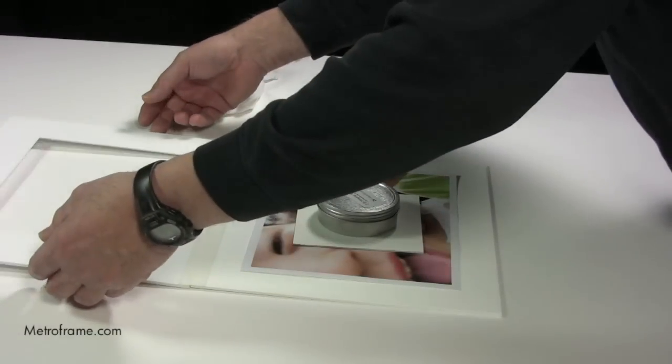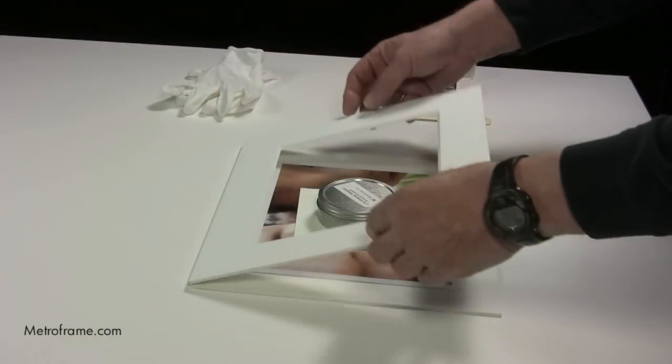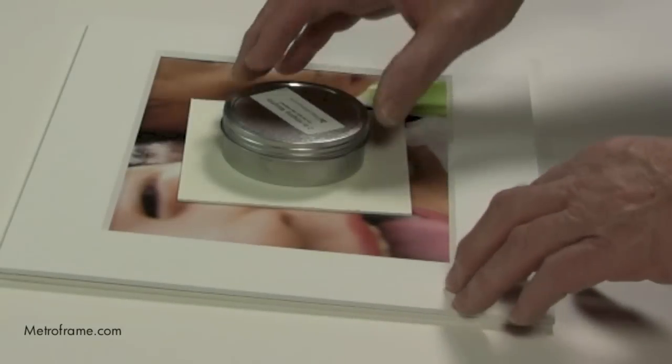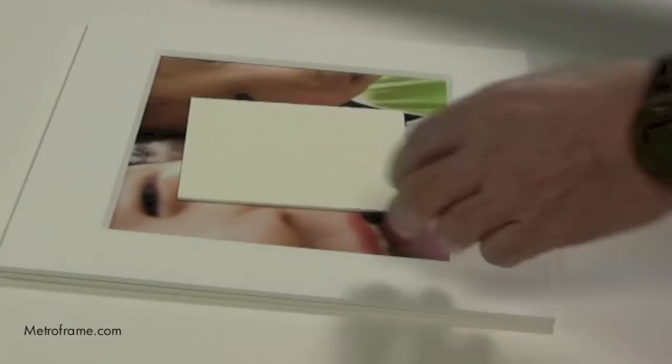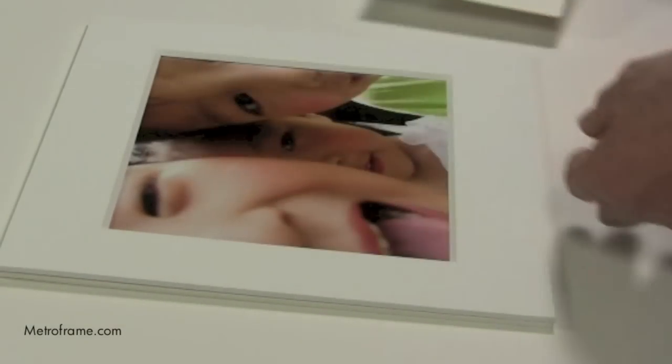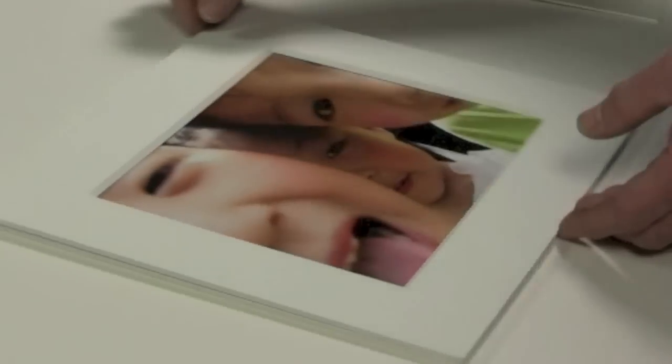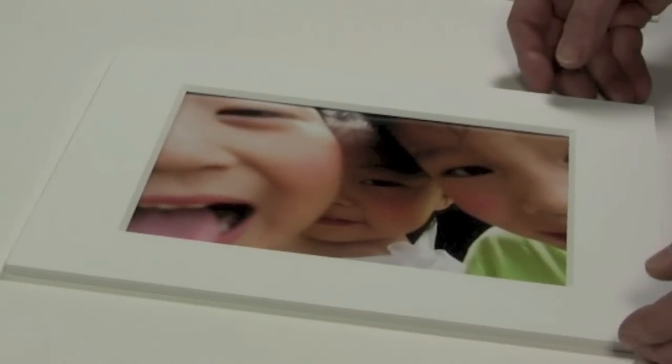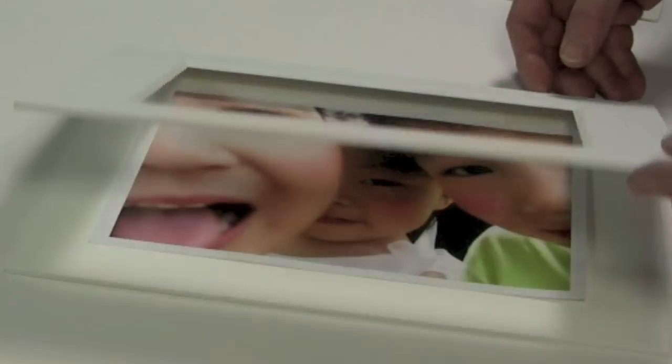Now take the mat and place it over the artwork. Remove the weights and the mat board. Your artwork is now ready to be framed.